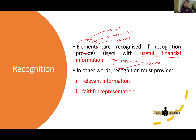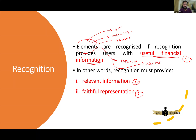An asset, a liability, an equity, an expense, or an income will be recognized if: one, it should provide useful information; two, it should provide relevant information; three, it should provide faithful representation. Remember this definition clearly because in upcoming videos I'll be uploading ACCA SteadyHub quizzes and OT revision cases covering recognition and objective type questions.